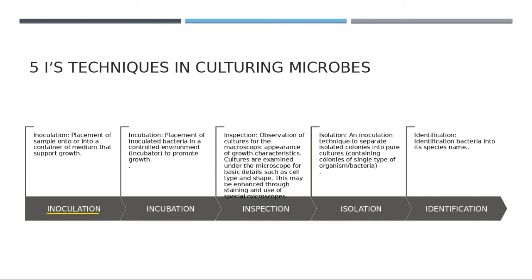After inoculation, we will put this culture inside an incubator. The incubator is the chamber where we can control the temperatures. That process is called Incubation — this is the second I.